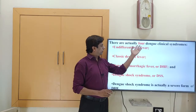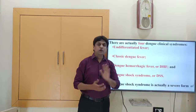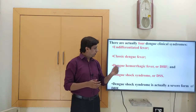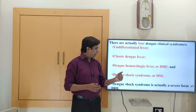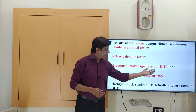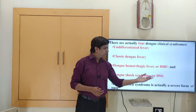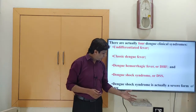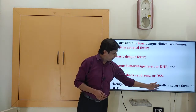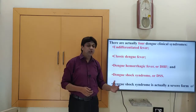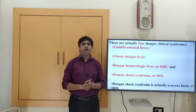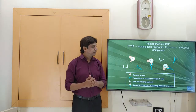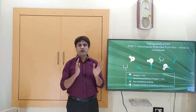There are actually four Dengue clinical syndromes: undifferentiated fever, classical Dengue fever, Dengue hemorrhagic fever, and Dengue shock syndrome. Dengue shock syndrome is a severe form of Dengue hemorrhagic fever. We will discuss these clinical syndromes one by one, but first, a few words about the pathogenesis of Dengue viral infection.